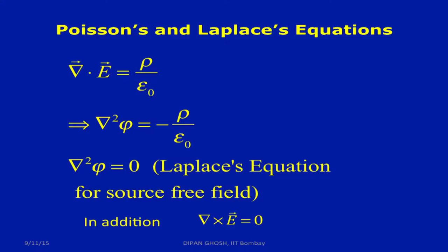We now have two electrostatic equations: del·E = ρ/ε₀ and del × E = 0. Since E = −∇φ, substituting gives ∇²φ = −ρ/ε₀, which is Poisson's equation. If ρ = 0, this reduces to ∇²φ = 0, which is Laplace's equation — valid in source-free regions. We will discuss solutions to these equations.